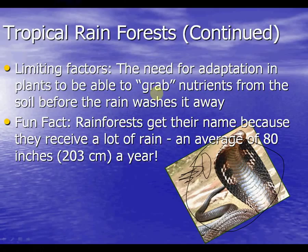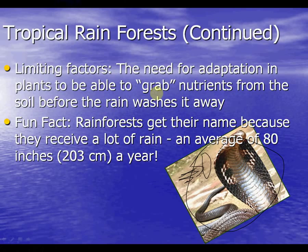It's interesting to think about how difficult it is for plants in the tropical rainforest compared to our lives — it would be like someone throwing a bag of popcorn in the air and you trying to grab every little piece before it hits the ground. Rainforests get their name because they receive a lot of rain — an average of 80 inches or 203 centimeters a year.